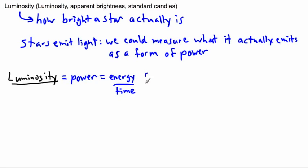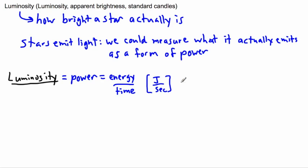When we say power, what we mean is some sort of energy emitted per unit time. That means this has units of — energy is measured in joules, whereas time is measured in seconds. So we could say that power, or luminosity, is measured in joules per second. But we actually have our own unit for it: they're called watts. So that's the unit we can use — joules per second, or watts.